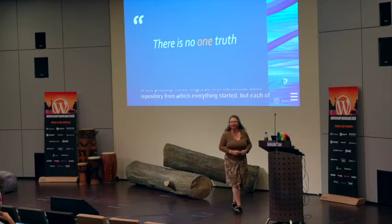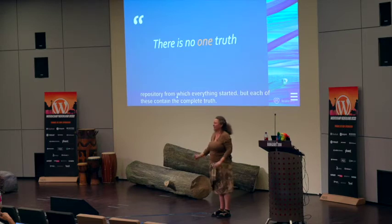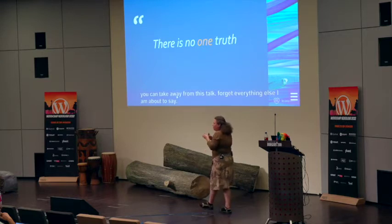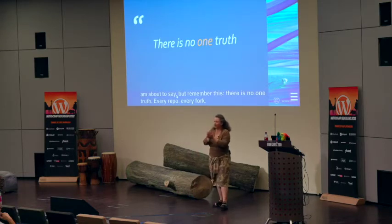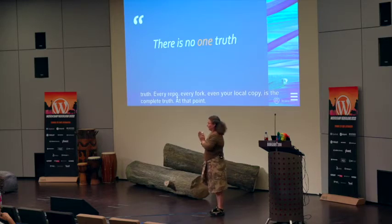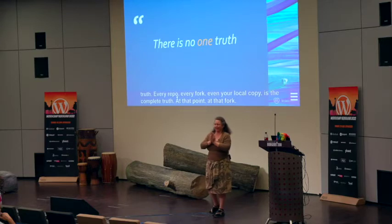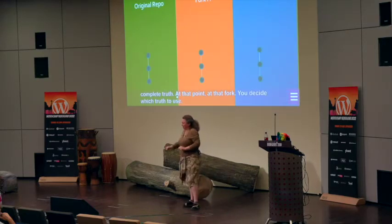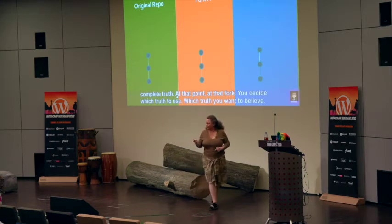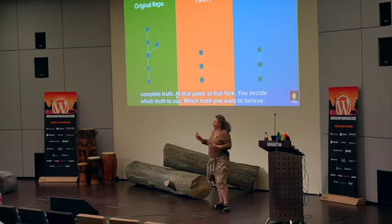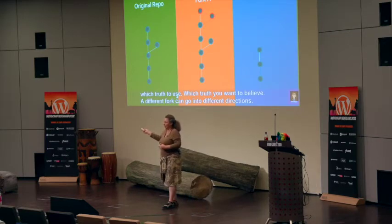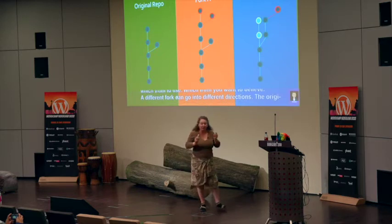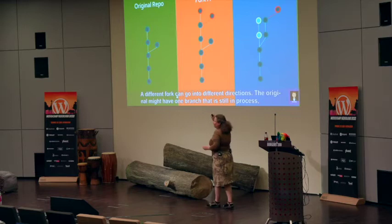So if there's one thing you take away from this talk — forget everything else — remember this: there is no one truth. Every repo, every fork, even your local copy, is the complete truth at that fork point. And you decide which truth you use. Different forks can go in different directions. The original might add commits and have a branch still in progress, but another fork might go in a completely different direction. All of that is fine. They are their own truths.